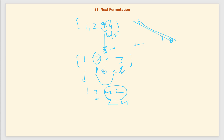Continuing further from 1 3 4 2, applying the same rule again, the next permutation will be 1 4 2 3. Now you have got the idea — pause the video and try to code it yourself before continuing.